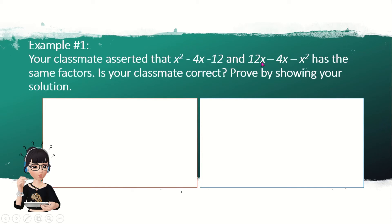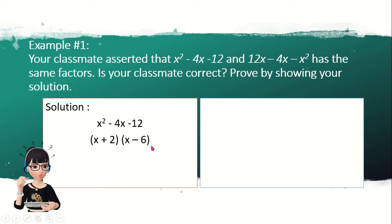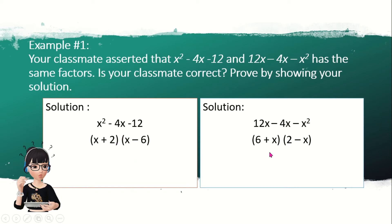If we look at the given, the first term and the last terms are being swapped. So we're going to see if they have the same factors. For x squared minus 4x minus 12, the answer is (x + 2)(x − 6). While for 12 minus 4x minus x squared, we have (6 + x)(2 − x). The whole numbers are also swapped in places and the signs are not the same. Here we have x plus 2 and here we have 2 minus x; x minus 6 and the other one is 6 plus x. So we can say that these two given expressions do not have the same factors.